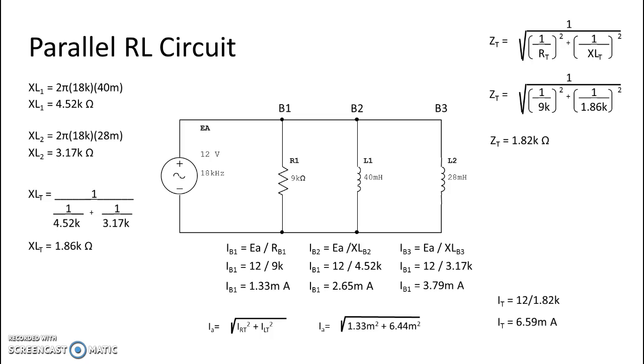And no surprise, here in our RL pure parallel circuit, especially with each branch having only one component, just like when we had a pure resistive parallel circuit, each of those components' voltage drops are going to be equal to applied voltage. So R1 is 12 volts, L1 is 12 volts, and L2 is 12 volts.